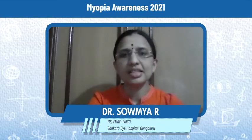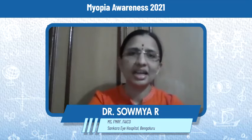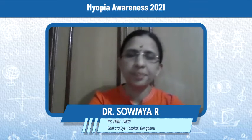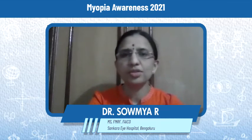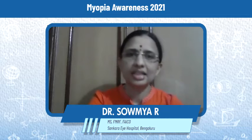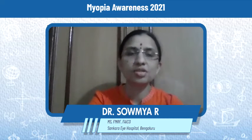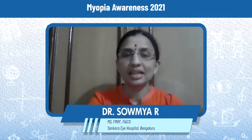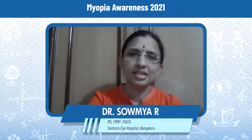Hello everyone, let's discuss a few things about child eye health and myopia in children today. Myopia essentially refers to short-sightedness, which means the child is able to see at near very clearly but not able to see at distance.